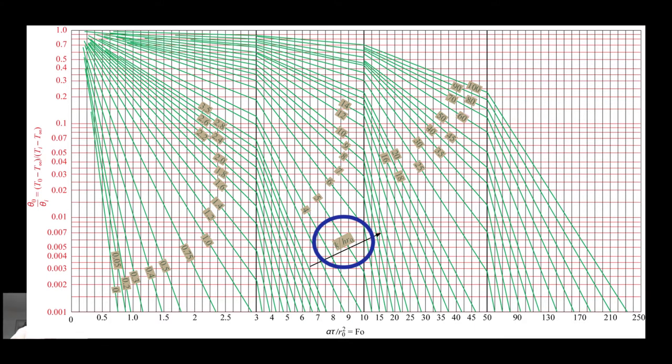What we have here are our curves k over hr naught. So we have to find the appropriate curve and we're dealing with 1.106. Looking, there is one and there is 1.2, so we're halfway between those two. And then what about the Fourier number? Where are we with the Fourier number? We had 1.459, so there is 1.5. So there's 1.1, 1.2. I would say 1.459 is probably somewhere right in about here.